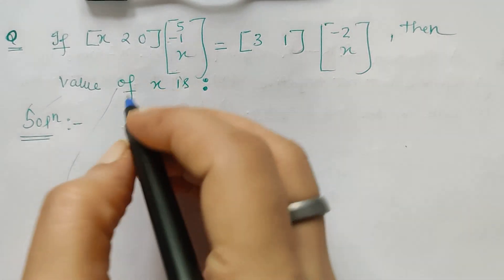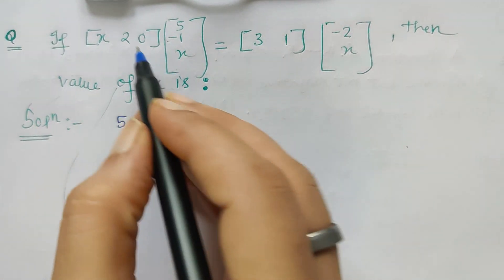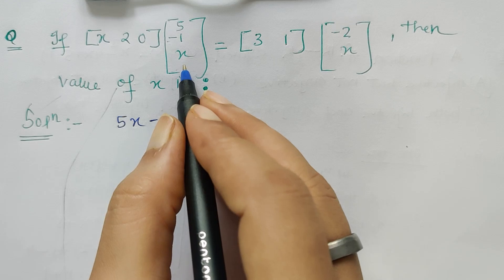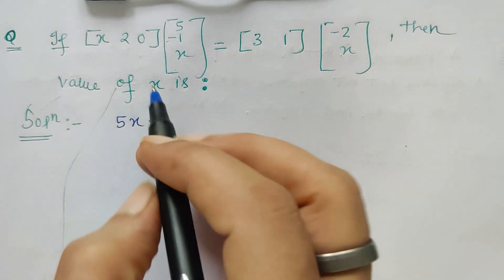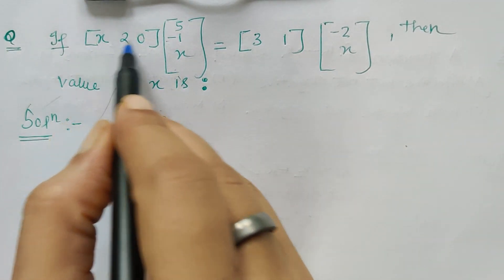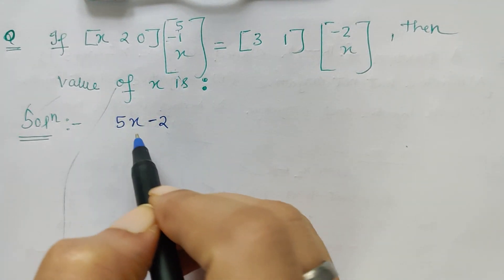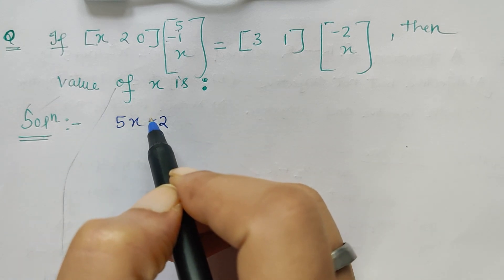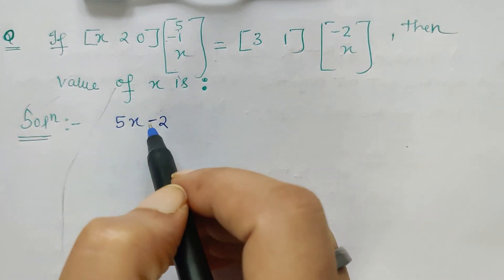So x into 5 is 5x and 2 into minus 1 is minus 2, x into 0 is 0. So this is one element because this row and this column multiplication and corresponding addition of the elements gives us one element.